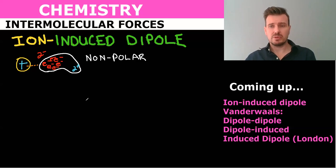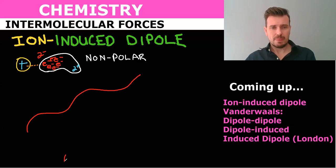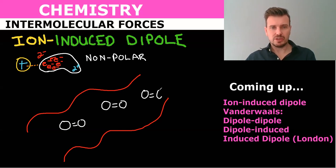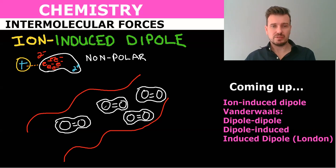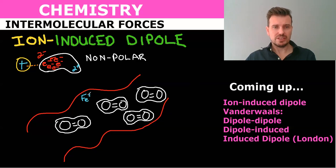These are weaker than our ion-dipole forces. Let's look at an example: in our blood we have oxygen molecules, O2, going through our blood, and these oxygen molecules are non-polar. In our blood we've also got iron, which we know is Fe3+. So these are iron ions.